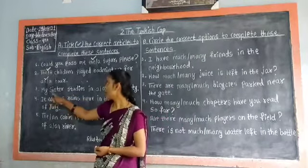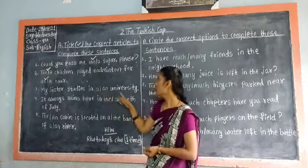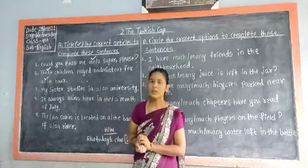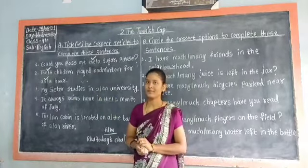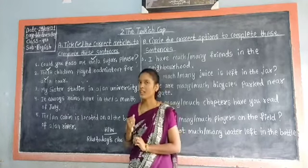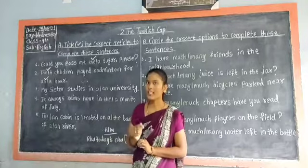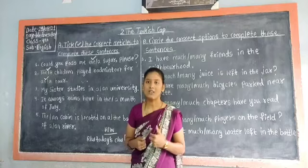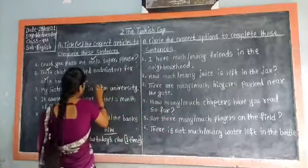Third sentence: my sister studies in a or an university. The correct answer is 'a.' Even though the word 'university' begins with the vowel letter U, its pronunciation begins with a consonant sound — 'university' — so we use the article 'a.' Put tick to the article 'a.'